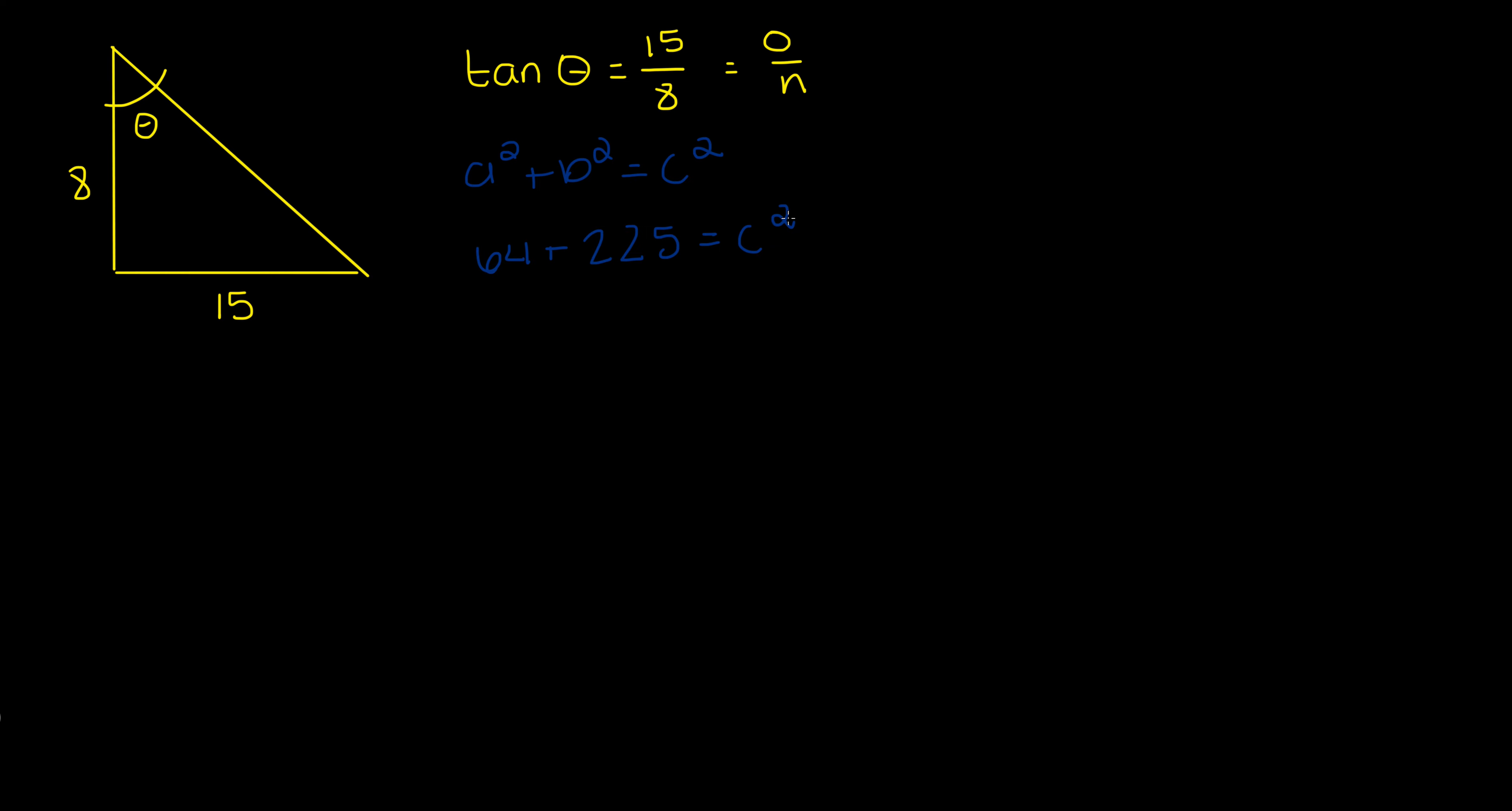All right so 8 squared plus 15 squared is equal to 289. This is equal to c squared. Well we're not trying to find c squared, we're trying to find c. So I'm going to take the square root.